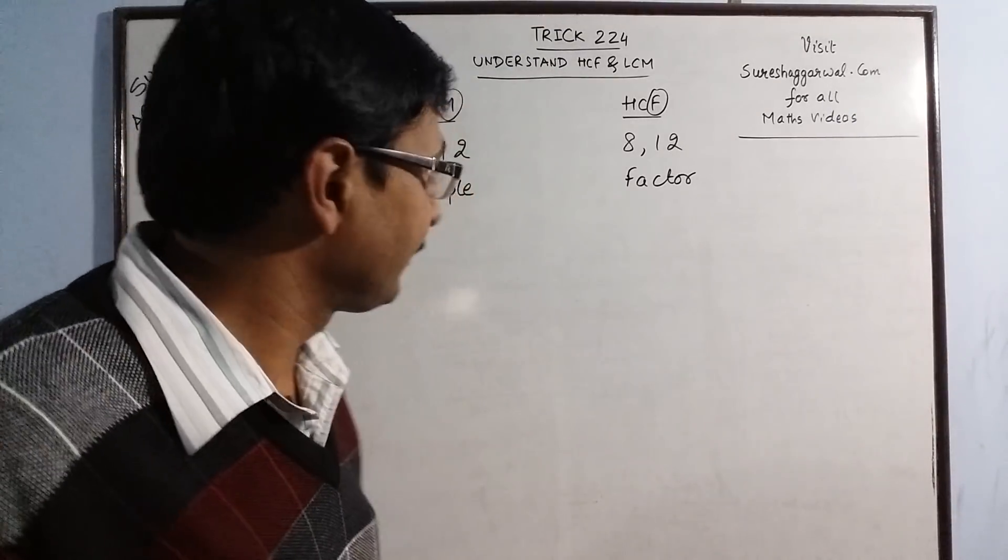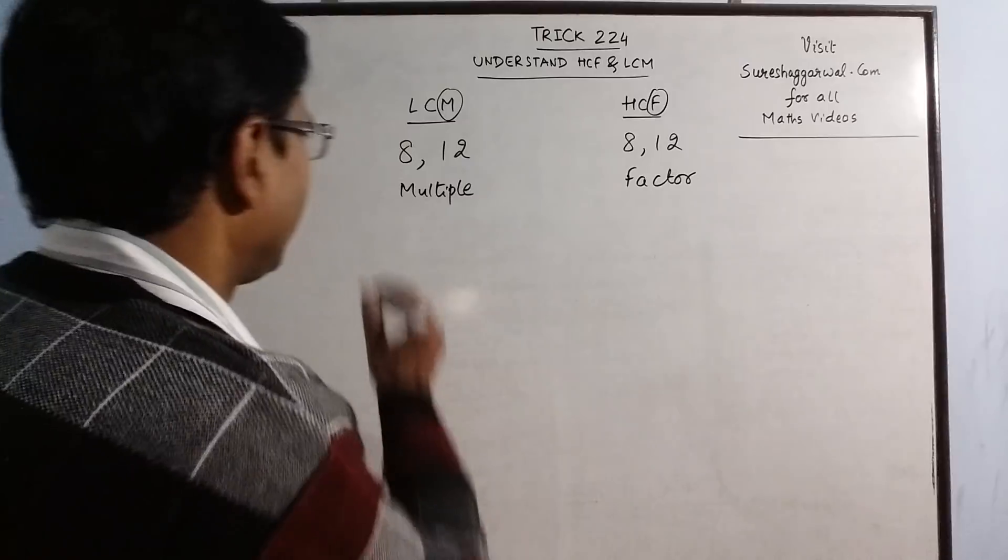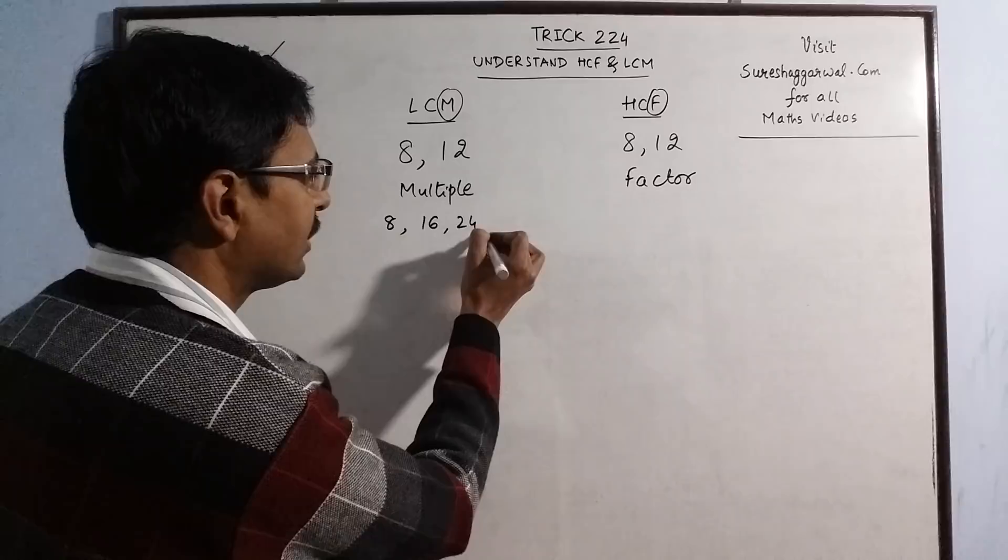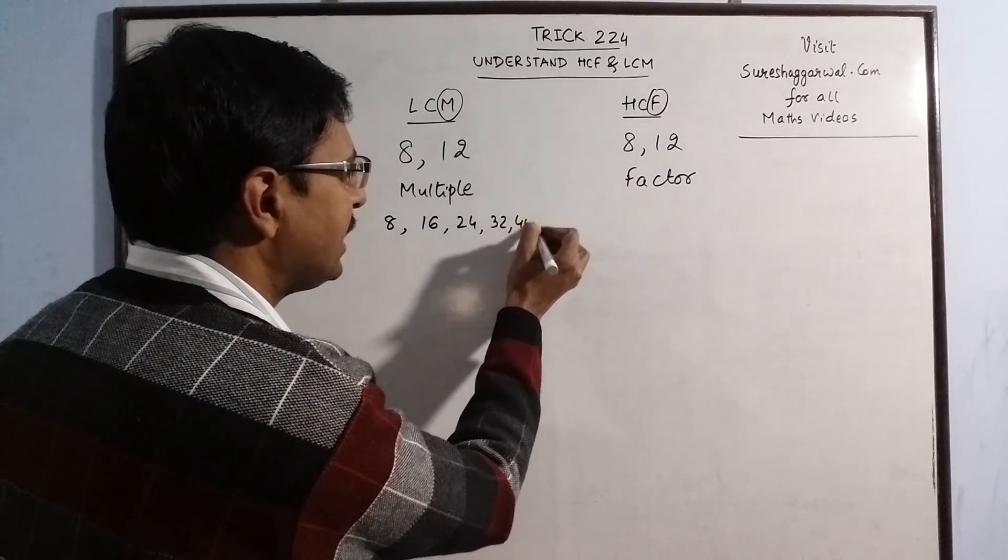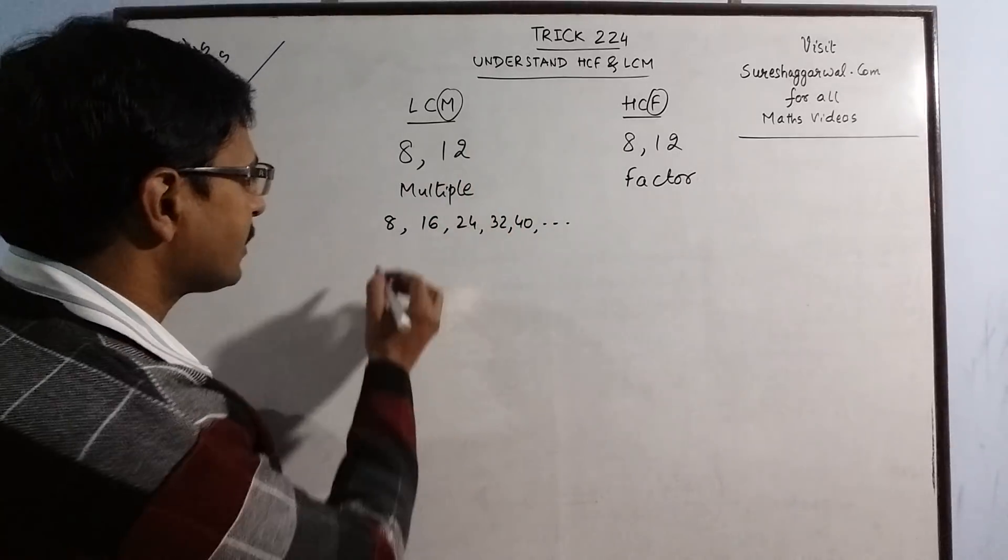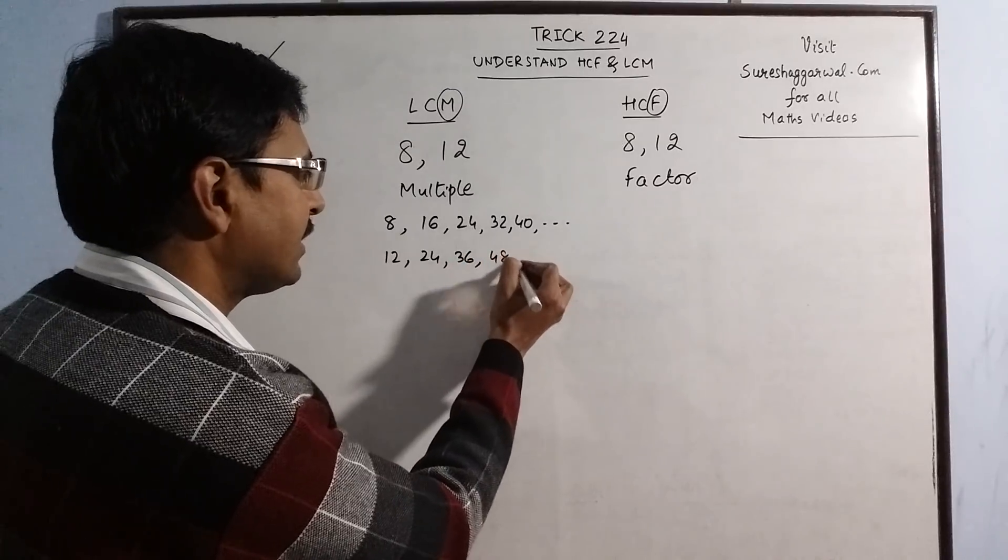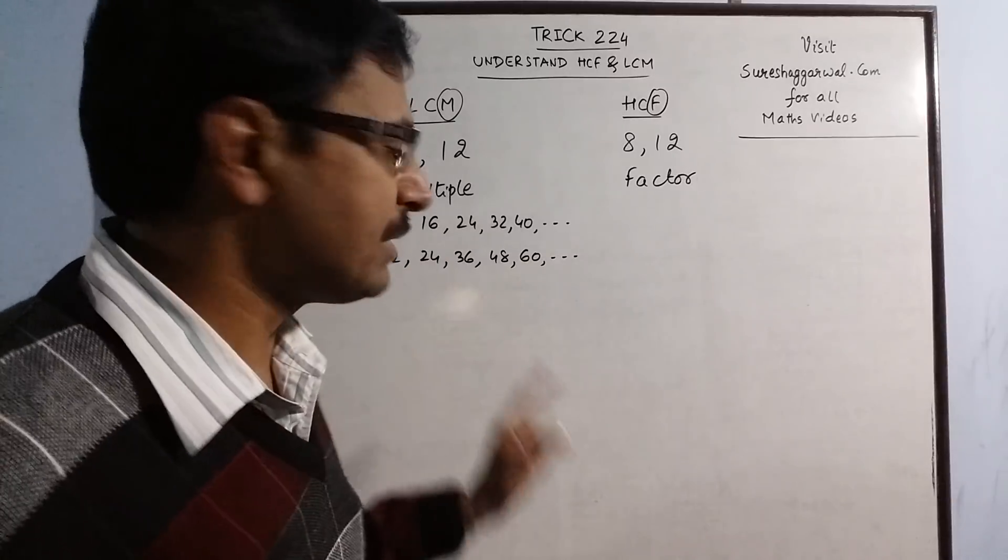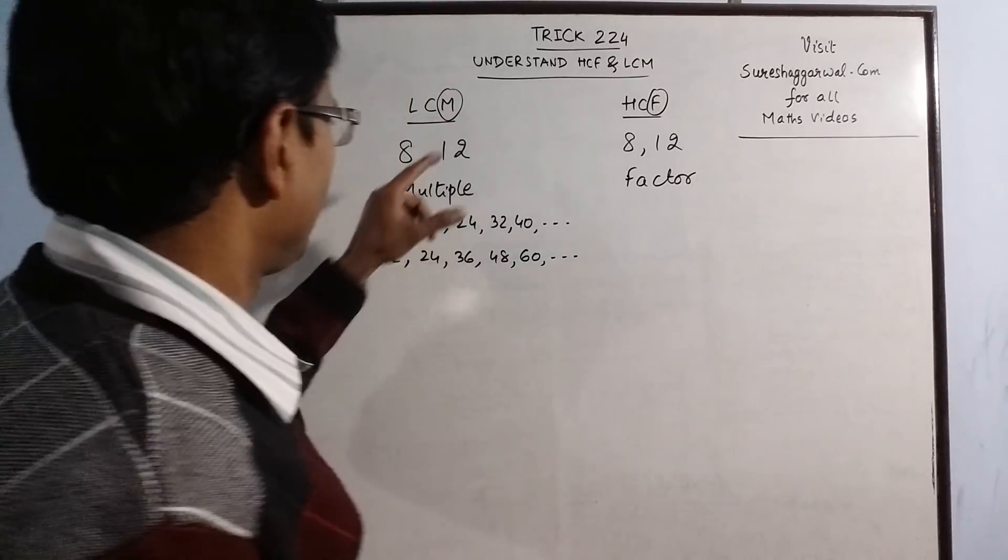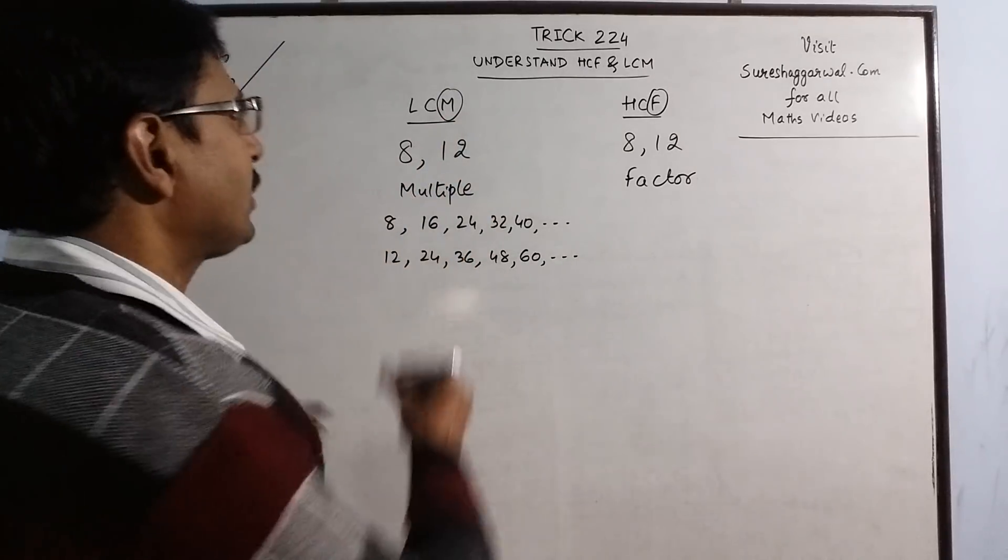The factors of 12 cannot be greater than 12, so it has to be a number which is smaller than 12. Now let me write the multiples of these two numbers 8 and 12 whose LCM is to be found out. See 8, 16, 24, 32, 40. Now these are the multiples of 8. And similarly if you write the multiples of 12: 12, 24, 36, 48, 60 and so on. These are the multiples of 12. Now what does C stand for?